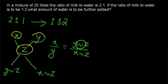All these x, y, and z should represent the same thing — that is the main thing to note while using the rule of allegation. So here we want to find out the ratio and the amount of water to be further added, and we can use the rule of allegation.